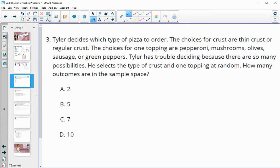Number three, Tyler decides which type of pizza to order. The choices for crust are thin crust or regular crust. The choices for toppings are pepperoni, mushrooms, olives, sausage, and green peppers. Tyler has trouble deciding because there are so many possibilities. He selects the type of crust and one topping at random, how many outcomes are in the sample space.